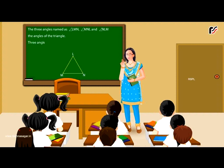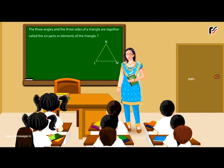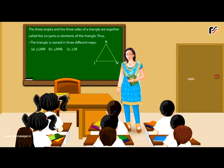The three angles are denoted by angle M, angle N and angle L respectively. The three angles and the three sides of a triangle are together called the six parts or elements of the triangle. Thus, the triangle is named in three different ways: triangle LMN, triangle MNL, triangle NLM. Vertices of triangle LMN are L, M and N.